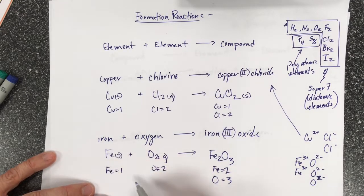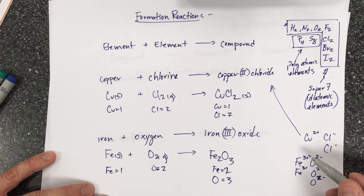Anytime you see one of these monoatomic elements, it's easy to balance that. So I leave that till the end. So I want to balance my oxygens. Here I've got 2 and 3. The lowest common multiple for 2 and 3 is 6.